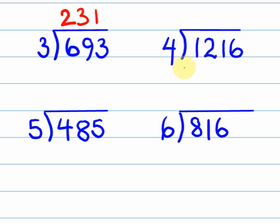The next one. 1 divided by 4 we can't do so I carry the 1 across. 12 divided by 4 is 3. 1 divided by 4 we can't do. So, I put the 0 up there and I carry the 1 across. 16 divided by 4 is 4. So, the answer is 304. I hope you're doing really, really well so far.